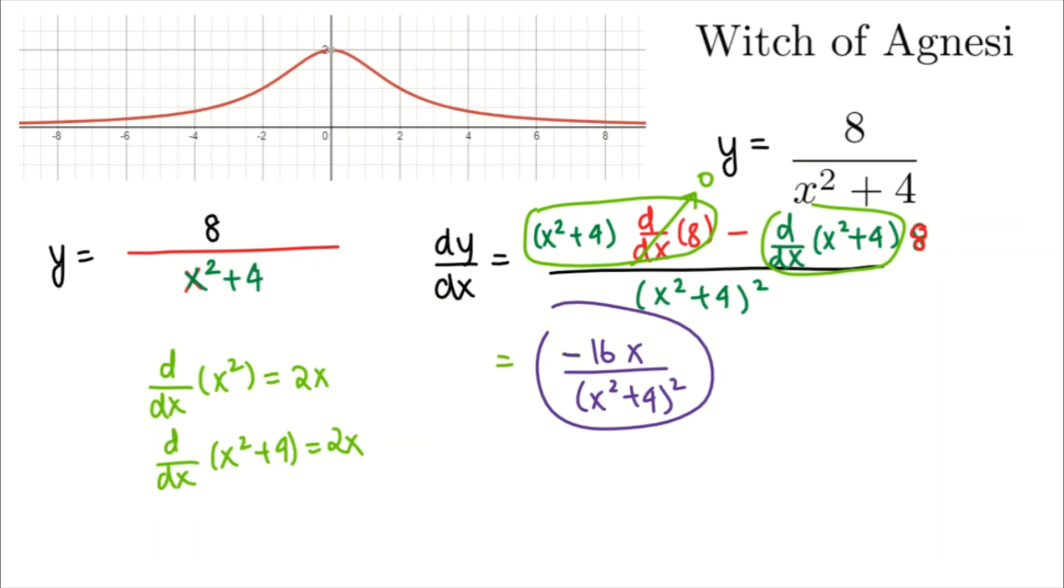A quick check. Let's see if you're figuring out the derivative at x equals 0. You will have negative 16 times 0 divided by 0 squared plus 4 everything squared. This just comes out to be 0, and 0 it is.